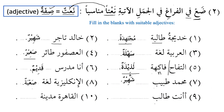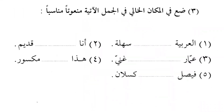'A-anta talibun jadidun mujtahidun?' — Are you a new, hardworking student? And: 'Al-Qahiratu madinatun jamilatun' — Cairo is a beautiful city. Now the next exercise means: put in the spaces or blanks — 'fi al-makani al-farigh' — in the following sentences, a suitable adjective.